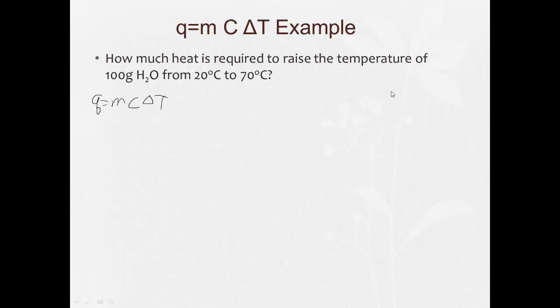And then over here, we're going to write Q equals, M equals, C equals, delta T equals. And then we're going to read the problem to see what's what. How much heat, so Q, that's what we're trying to solve for, is required to raise the temperature of 100 grams water, so the mass is 100 grams water from 20 degrees Celsius to 70 degrees Celsius. Now this is an important thing. Whenever we talk about change in temperature, it's always going to be equal to the final temperature minus the initial temperature.